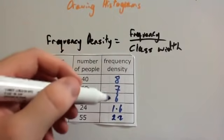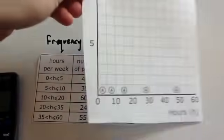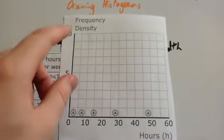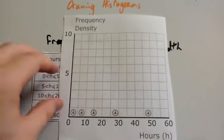Now we've got the frequency densities so we can draw a histogram. So, draw a set of axes. This should look something like this. Ignore these bits at the bottom please.